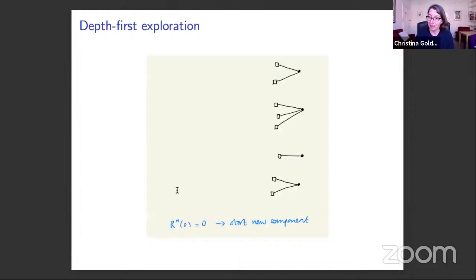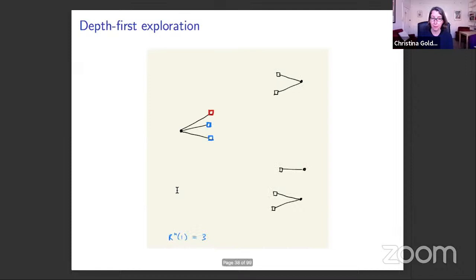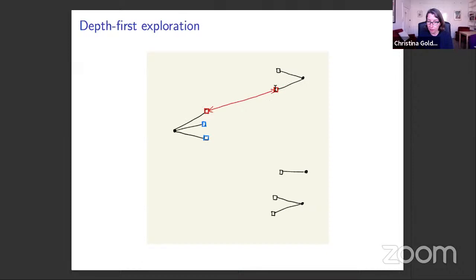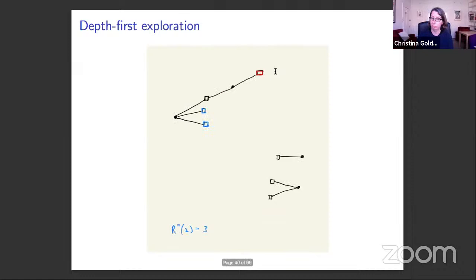We sample the active half-edge's pair — either belonging to an unseen vertex or one already on the stack — connect them and remove both. If we discover a new vertex, we add its remaining half-edges to the top of the stack and declare the top one the new active half-edge. When the stack empties, we pick a new vertex with probability proportional to its degree, put its half-edges on the stack, and continue. The stack size R_n(i) equals zero if and only if we've just finished exploring a component.